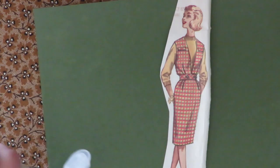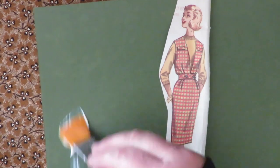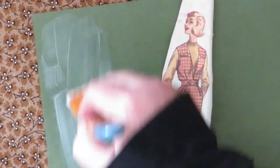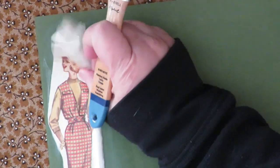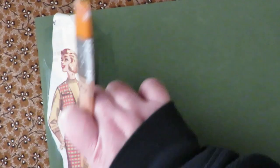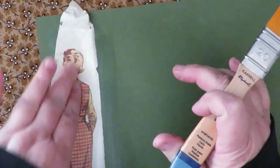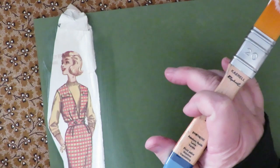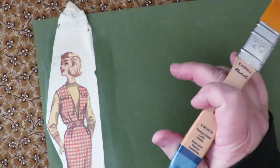You use some mod podge and you put some mod podge down on your paper. You can also use matte gel medium. You put your image down and then you burnish it with your hand or with paper towel or a soft cloth. You just want to make sure that it sticks down really well and then you're going to want to let it dry completely and then you trim it out.